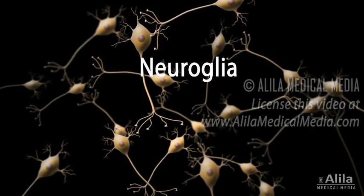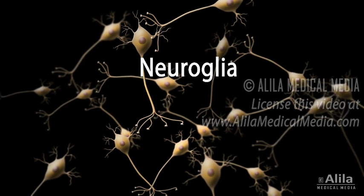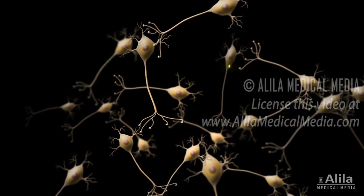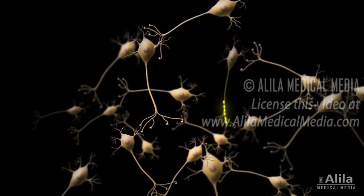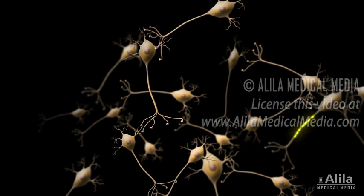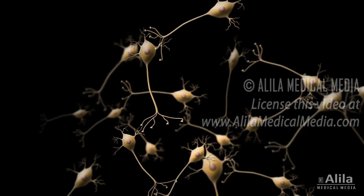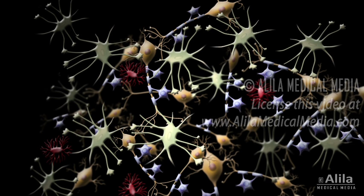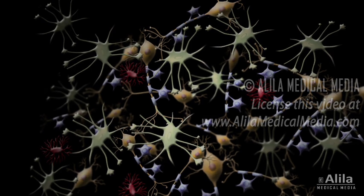A human brain contains billions of neurons. Neurons are probably the more important and better-known cells of the brain, as they carry out the brain's communication function. Less known are some trillions of support cells called glia or glial cells. The glia may not be the center of attention, but without them, neuron functions would be impossible.